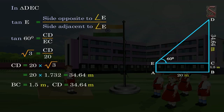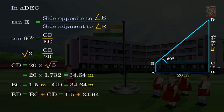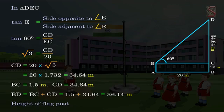Now we know that BC is 1.5 meters and CD is 34.64 meters. Hence, BD is equal to BC plus CD, which is equal to 1.5 plus 34.64 meters, equal to 36.14 meters. Therefore, the height of the flag post is 36.14 meters. Thus, we are able to find the height of the flag post without actually measuring it.